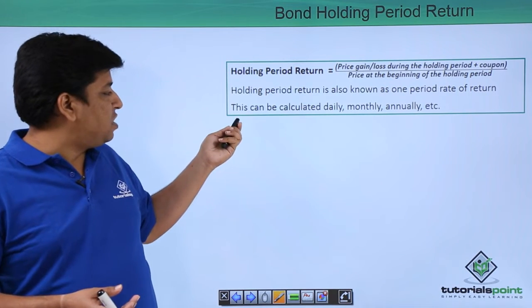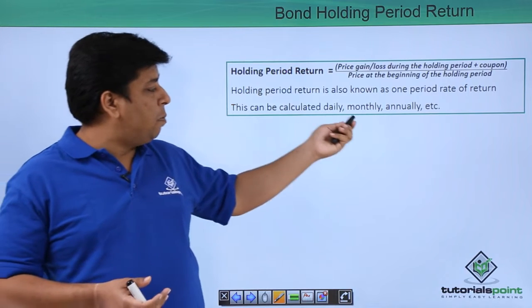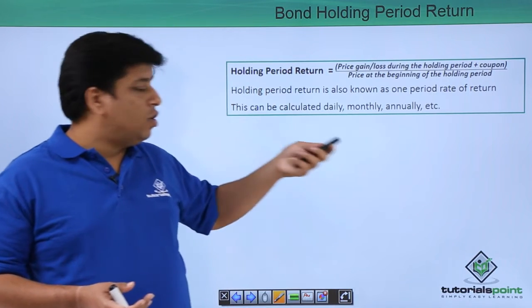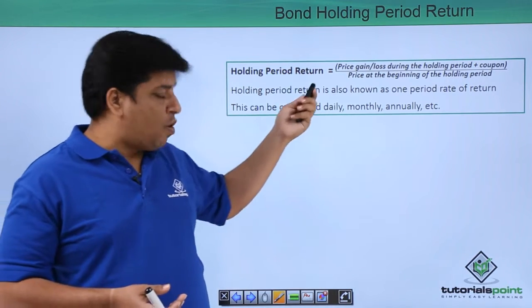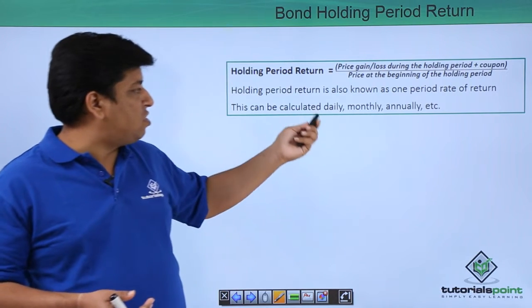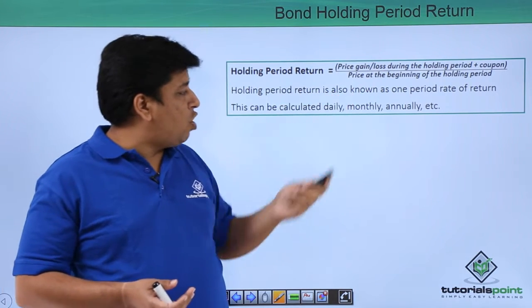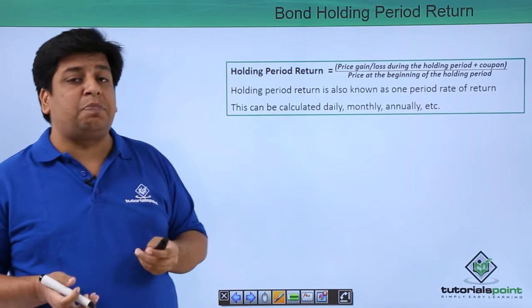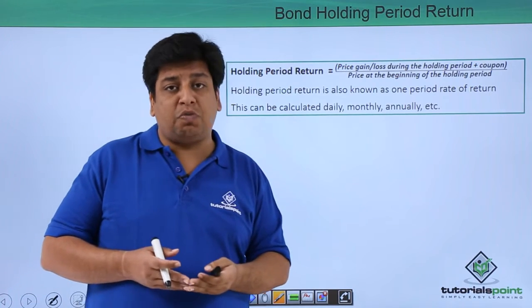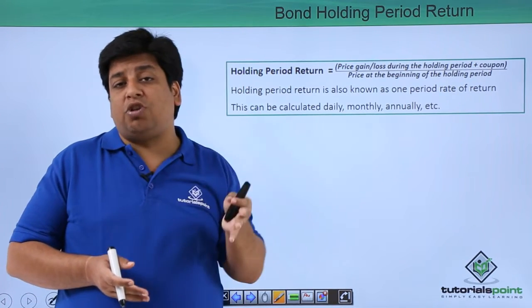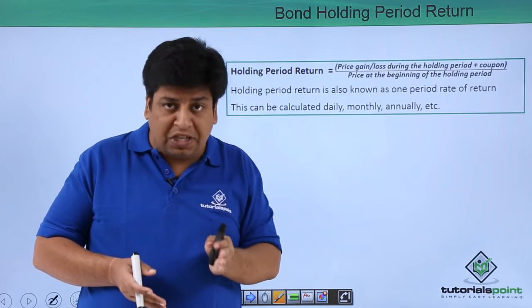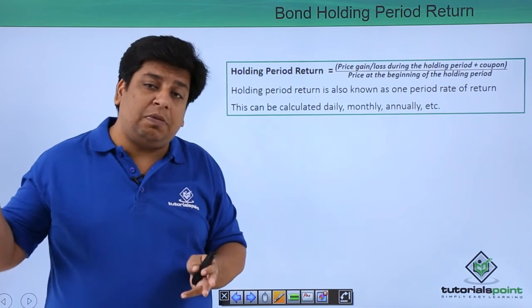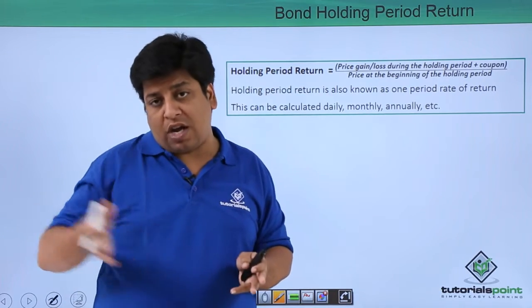This can be calculated daily, monthly, annually, etc. So exactly what is the formula? How we can calculate holding period return is price gain or loss during the holding period. That is basically the difference between the price of the particular investment in the current period minus price of the same product at the beginning of the period.